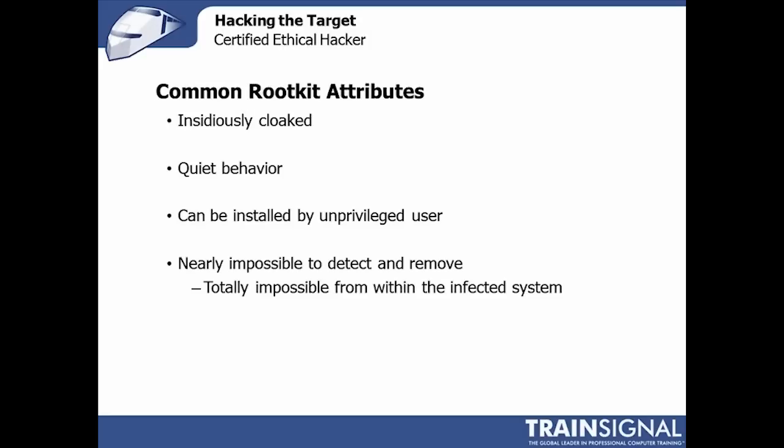Rootkits are almost always designed to cloak something and keep the execution of something quiet — whether it's a backdoor, a nefarious proxy, or some type of sniffing and reporting engine. They're designed so that a user or even an administrator can't see what's going on, can't see that execution. You might be able to footprint that something's using a little bit of memory — sometimes not even that — or using a little bit of hard disk space, but that's almost impossible to trace nowadays.